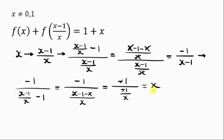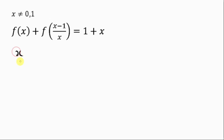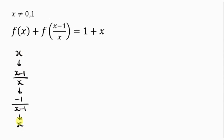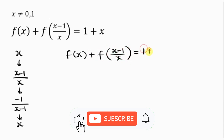You see that if I repeatedly replace x with x minus 1 over x, this expression is periodic. From x we get x minus 1 over x, from that we get negative 1 all over x minus 1, and then back to x. So the question given to us is f of x plus f of x minus 1 over x equal to 1 plus x.